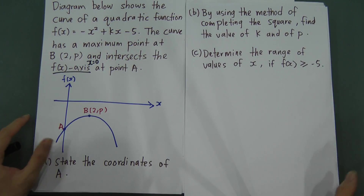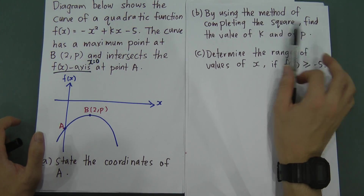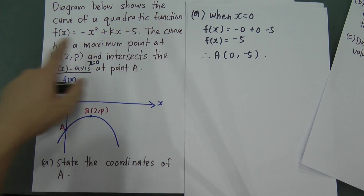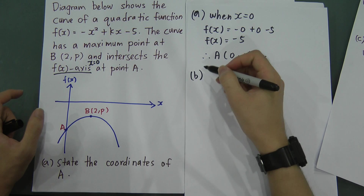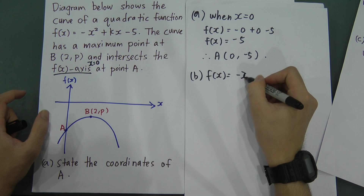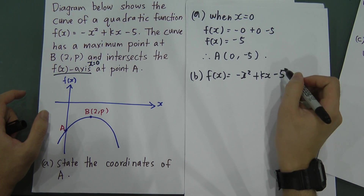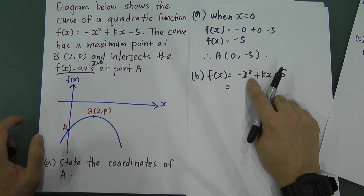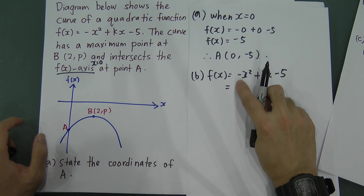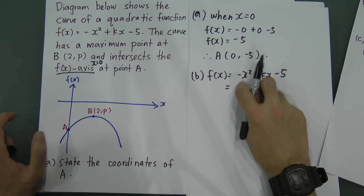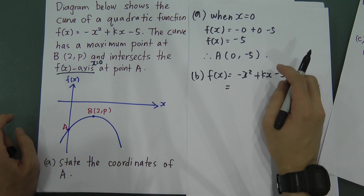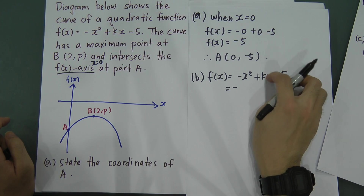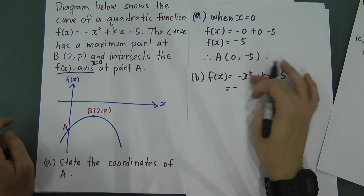For Part B, using the method of completing the square, find the values of k and p. When you start completing the square, the first thing is to make sure the x² coefficient is positive 1. If it's negative, factorize out the negative. So I factorize out the negative from the first two terms only — not the -5, since completing the square only uses those two terms.